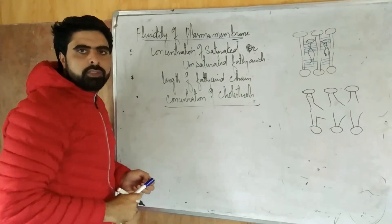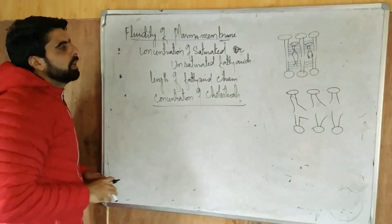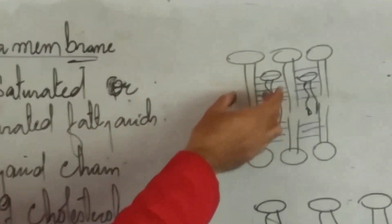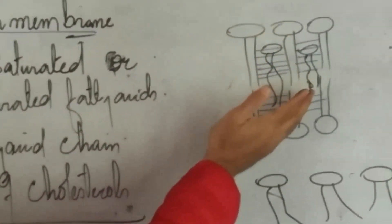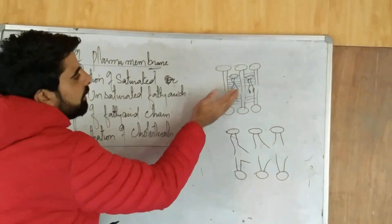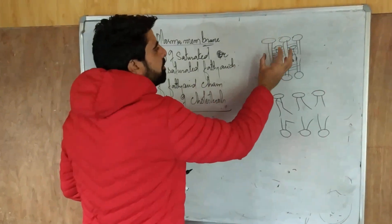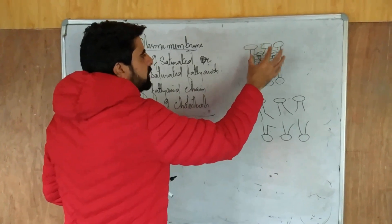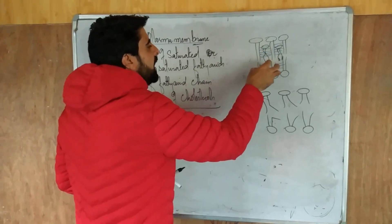Let's take the first one in detail. It is the concentration of saturated and unsaturated fatty acids. If we have a plasma membrane having more saturated fatty acids, the saturated fatty acids have a straight chain. So if you have a lipid bilayer consisting of saturated fatty acids, there is more compactness because of the hydrophobic interactions between the lipid bilayer and fatty acid chains. So it becomes more compact, so it is less fluid. But if it is more compact, it means it has a high melting temperature.